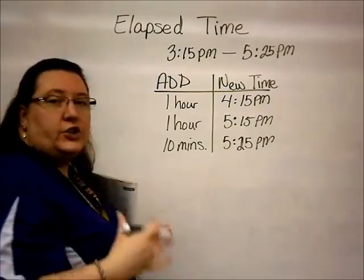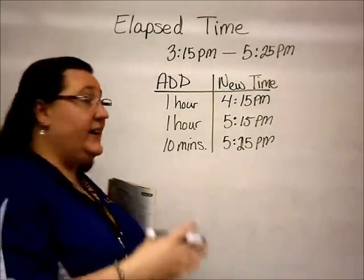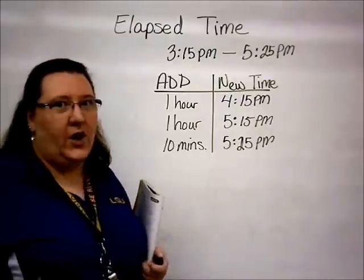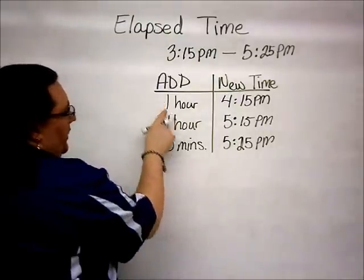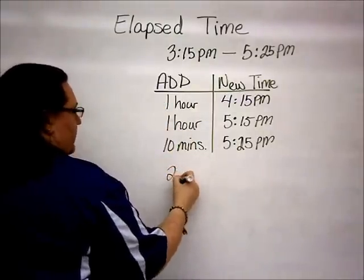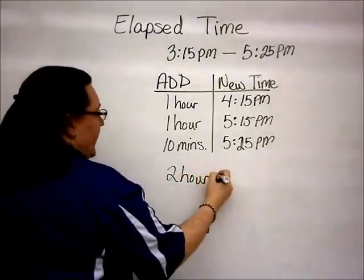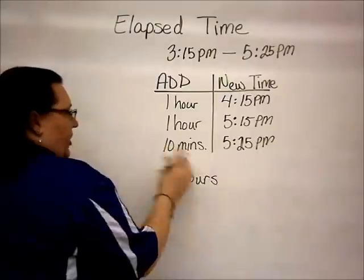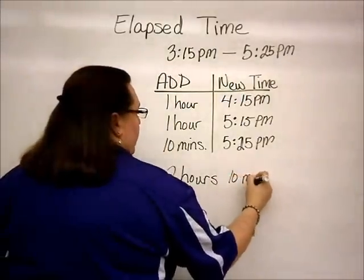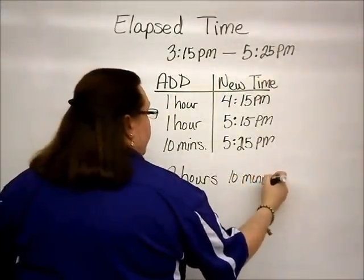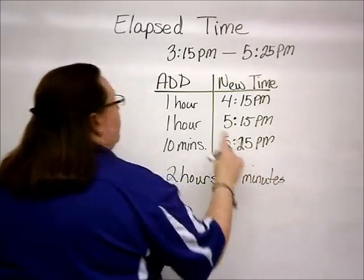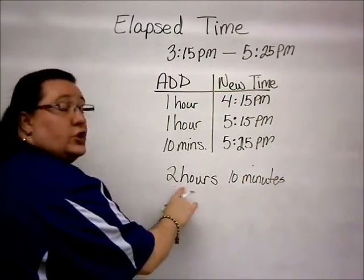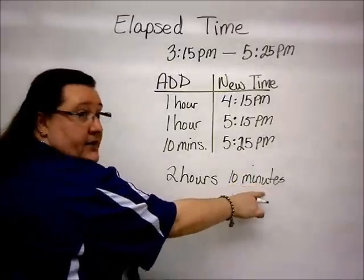Now all the student has to do is add up the add column — that's why we call it the add column. We have one hour, two hours, because we always add hours or the biggest amount of time first, and then our 10 minutes. So the elapsed time from 3:15 to 5:25 p.m. is two hours and 10 minutes.